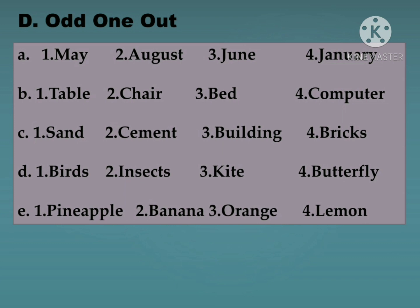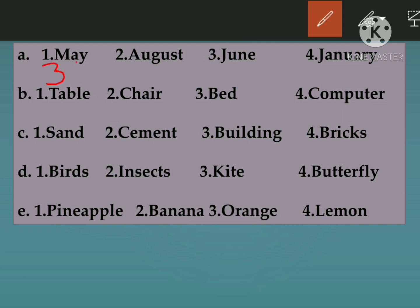Part D is odd one out — find the word that doesn't belong. First: May, August, June, January. May has 31 days, August has 31 days, June has 30 days, January has 31 days. The odd one out is June, because all other three months have 31 days but June has only 30.